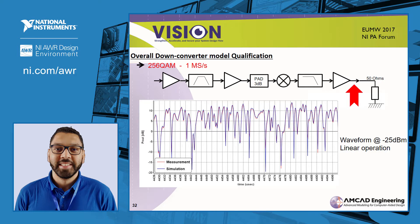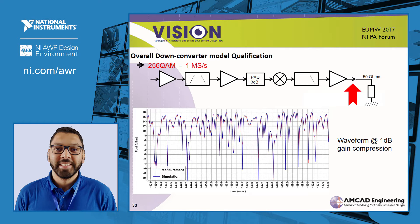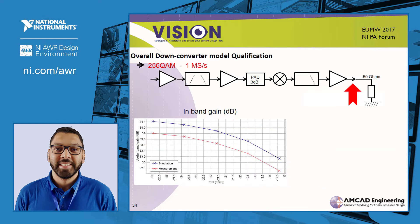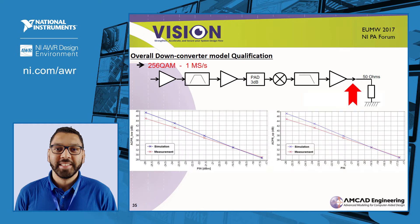Here we use a 256-QAM signal at 1 mega sample per second. The graph shows a waveform at linear operation and there is good agreement between model and data. We also have good results at 1 dB compression gain. We calculated the gain in the main channel and the comparison shows an error less than 0.4 dB. We measured left and right ACPR and observed excellent results in gain compression.